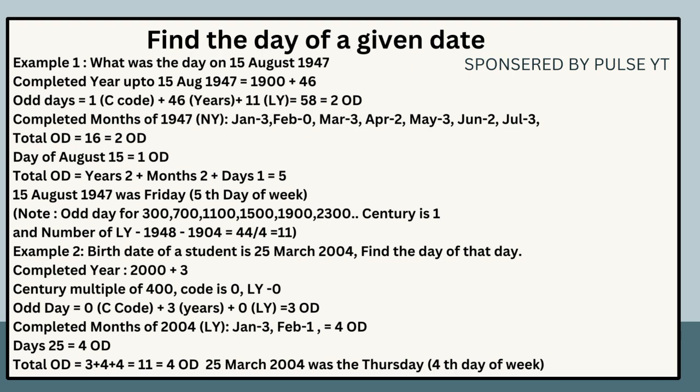Find the day of a given date. Example 1: What was the day on the 15th of August 1947? Completed years up to 15th August 1947 = 1900 + 46. Odd days = 1 (century code for 1900) + 46 years + 11 leap years = 58 ÷ 7 = remainder 2 odd days. Completed months of 1947 (normal year): JAN = 3, FEB = 0, MAR = 3, APR = 2, MAY = 3, JUN = 2, JUL = 3. Total = 16 ÷ 7 = 2 odd days. Day = 15 ÷ 7 = 1 odd day. Total = 2 + 2 + 1 = 5. The 15th of August 1947 was Friday (5th day of the week).